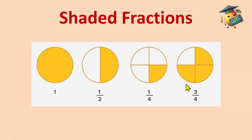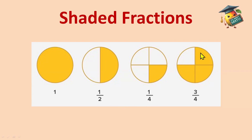Here you can see total parts are 4 and 3 out of 4 are shaded, so the shaded fraction is 3 by 4. We always write the denominator as the total parts and the numerator as the shaded part — or whatever the required question asks for. That is our numerator.